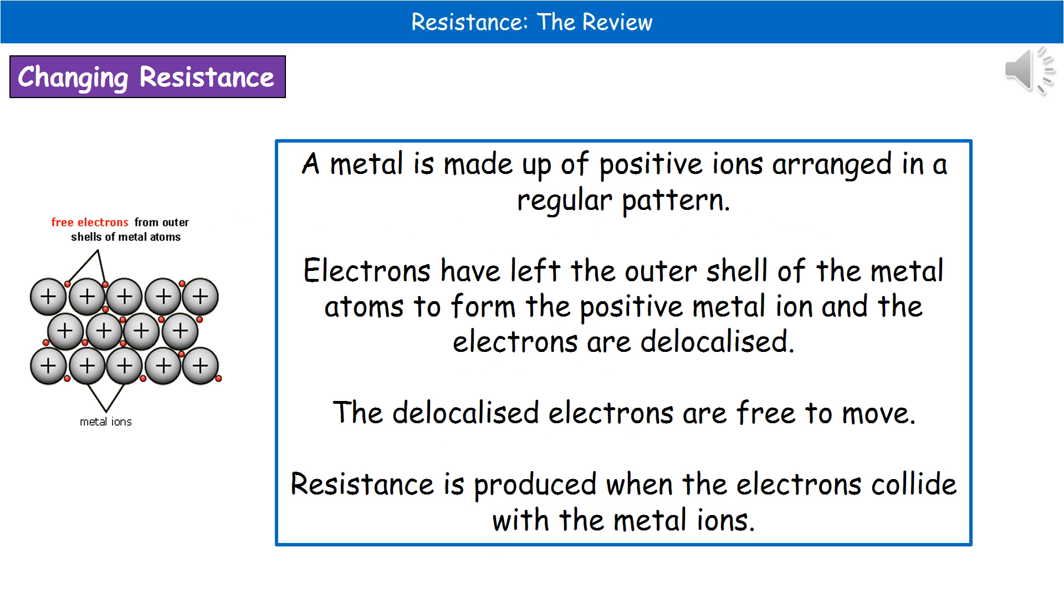To actually understand resistance, we need to recall the structure of a metal. This is something that we've already done in our chemistry topic. Just to recap on the structure of a metal, what we find is that we've got all the positive metal ions arranged in lovely neat rows in a regular pattern. Then you've got those delocalized electrons that are scattered amongst them. Those delocalized electrons have come from the fact that our metal atoms have actually lost that electron from their outer shell.